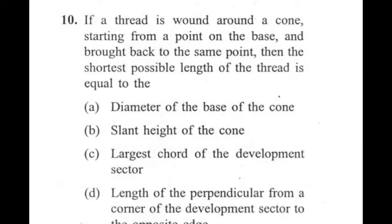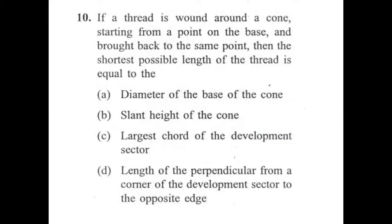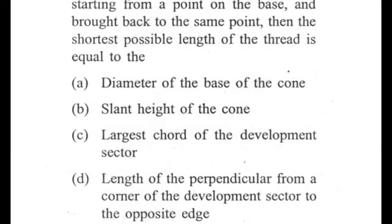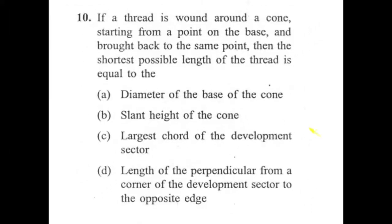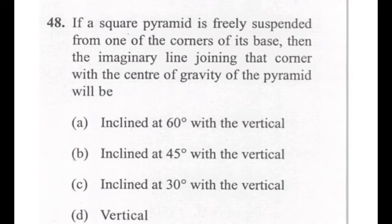If a thread is wound around a cone starting from the base and brought back to the same point, the shortest possible length of the thread equals the arc of the sector in the development — so option C is correct. For a square pyramid freely suspended, the concept of center of gravity applies: the center of gravity is always on the vertical point with no inclination, so option D is correct.